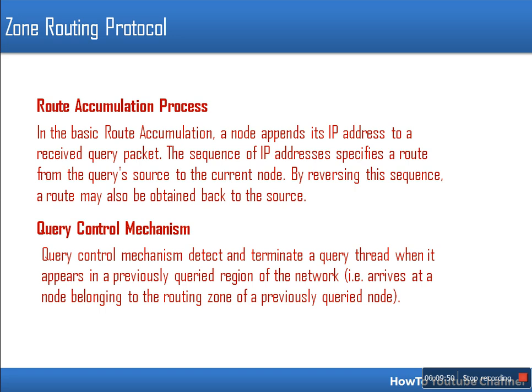Some key points about Zone Routing Protocol: in the route accumulation process, every node appends its IP address to the received query packet, and the sequence of IP addresses specifies the route from the query source to the current node. The query control mechanism ensures that the same route query is not repeated — if a node has already forwarded a query for a particular destination and receives the same query again, it will not forward it.